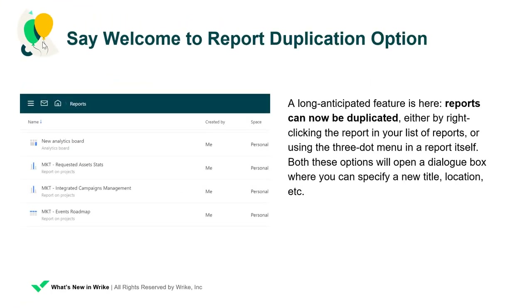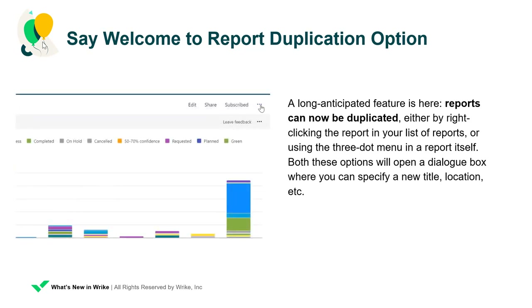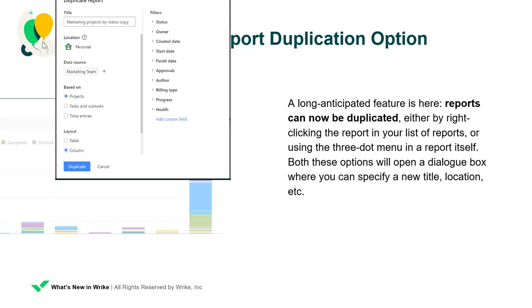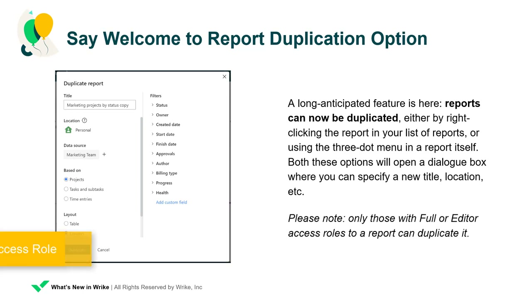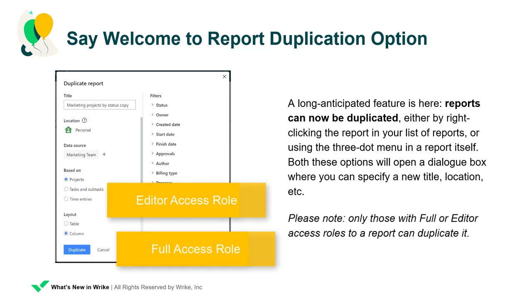Say welcome to the Report Duplication option. A long-anticipated feature is here. Reports can now be duplicated either by right-clicking the report in your list of reports or using the three-dot menu in the report itself. Both these options will open a dialog box where you can specify a new title, location, layout, grouping, and everything else. Please note, only users with full or editor access rules to a report can duplicate it.